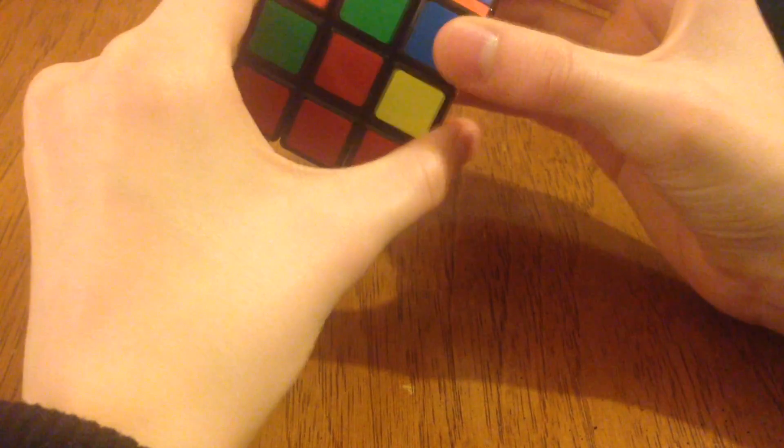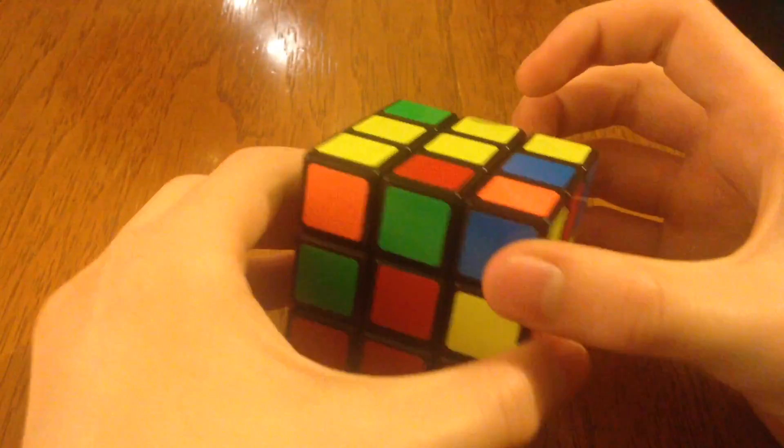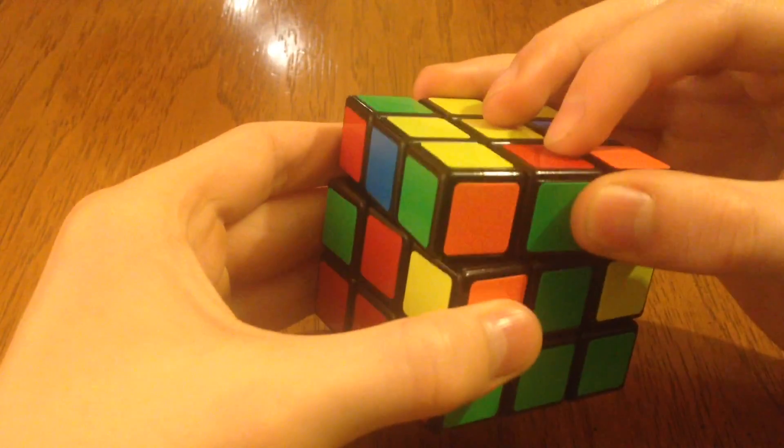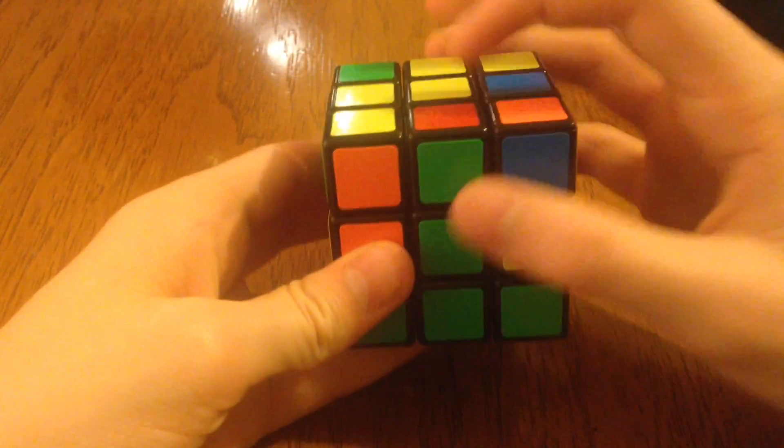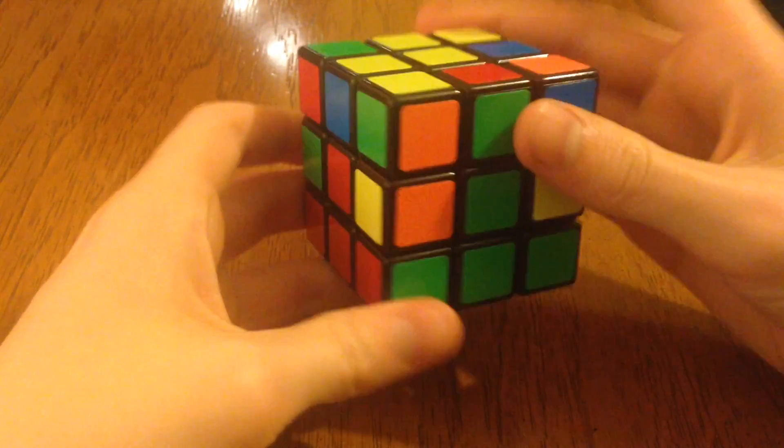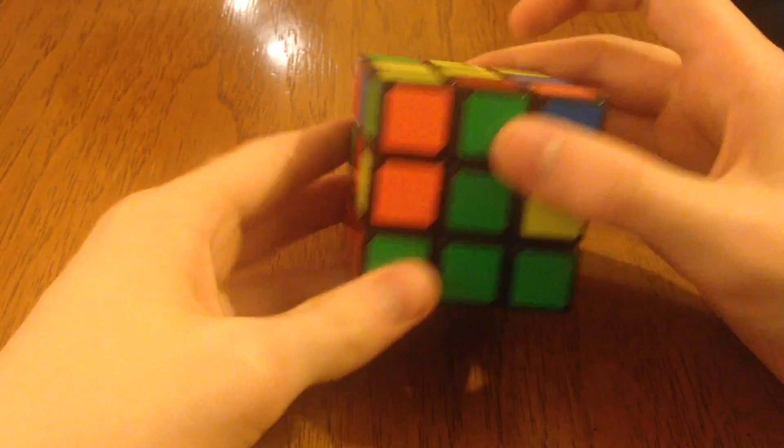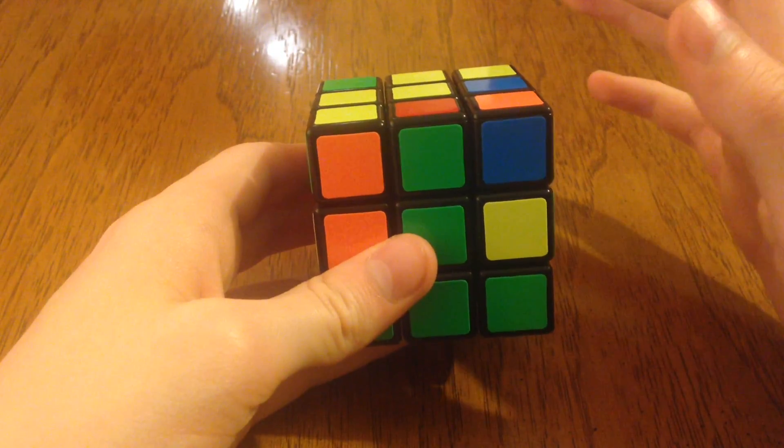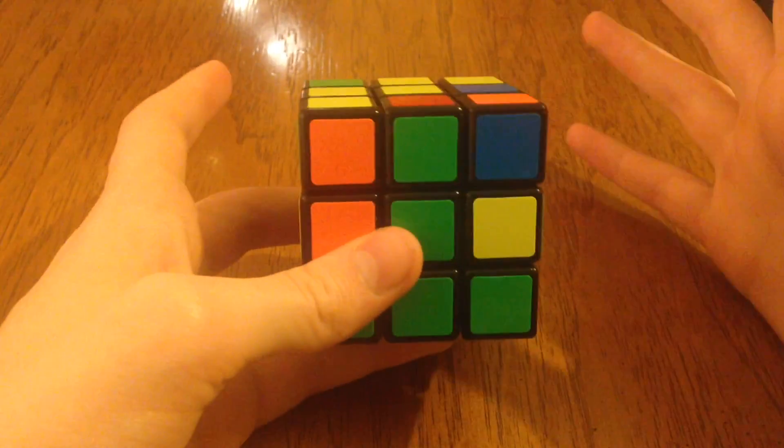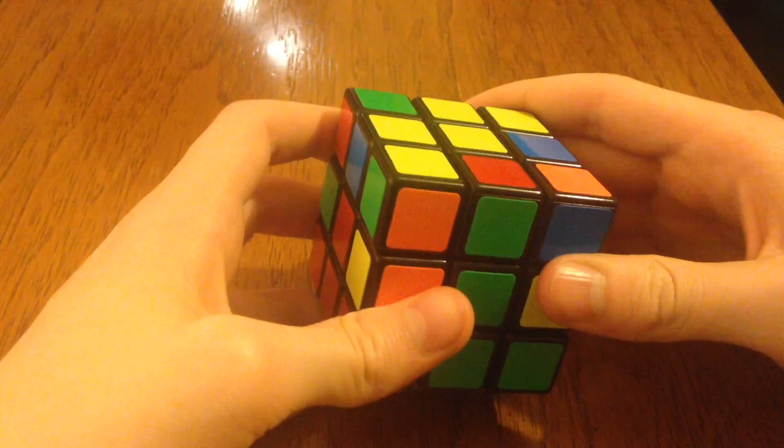So what you want to do is you want to position the piece where the colors match, just like that, right? Where the color is matching the center piece. And in this case, we're on the right side of the red. Now, there's two algorithms you're going to have to learn. And this is just where brute memorization comes in, right? There's nothing else for it.